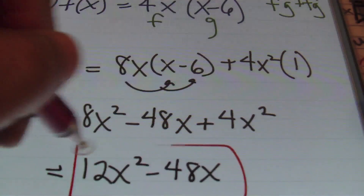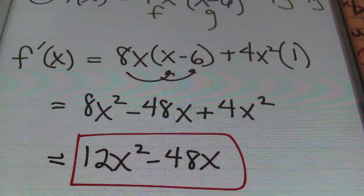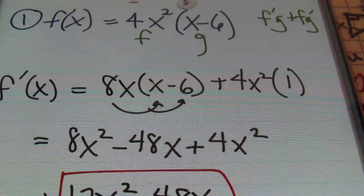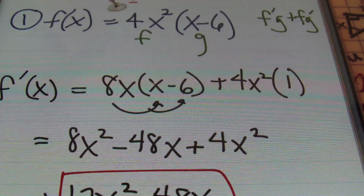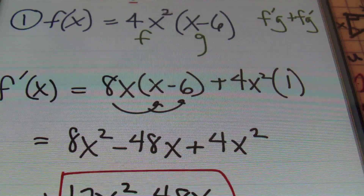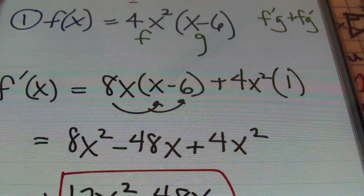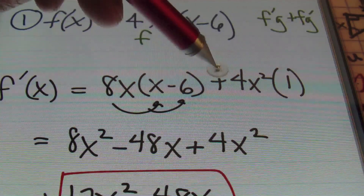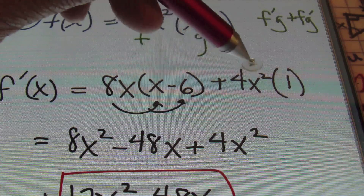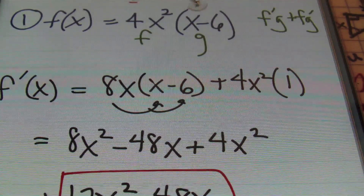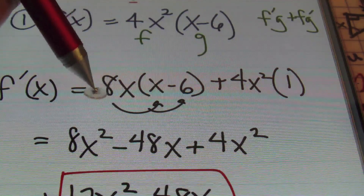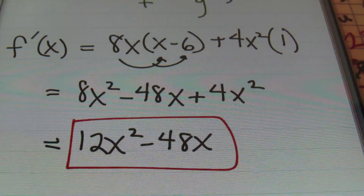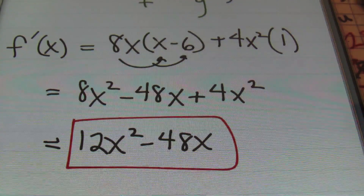So that was the product rule, ladies and gentlemen. We started out identifying our f function and our g function. Our f is 4x squared, our g is x minus 6. Then using the product rule, we took the derivative of f, which is 8x, times g, plus f, which is 4x squared, times the derivative of g, which is 1. Then we distributed, combined our like terms, and wrote our answer in descending order of x. Done.